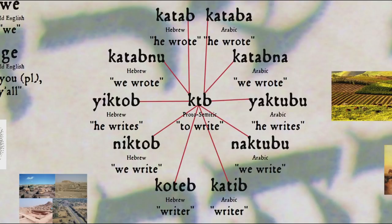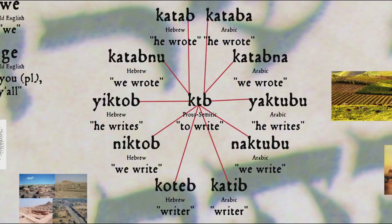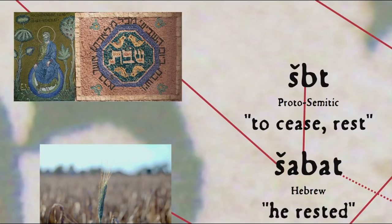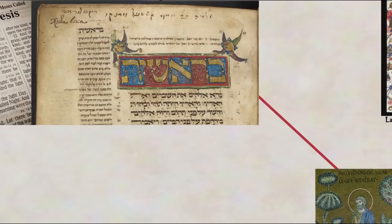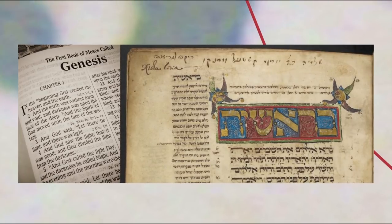Simply put, you then add whatever vowels and non-root consonants are appropriate to the particular form of the word in the particular Semitic language. In any case, the specific etymology would connect the Sabbath with the notion of God resting on the seventh day after creation, as described in the book of Genesis, or Bereshit in Hebrew.